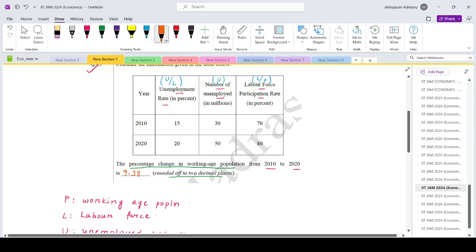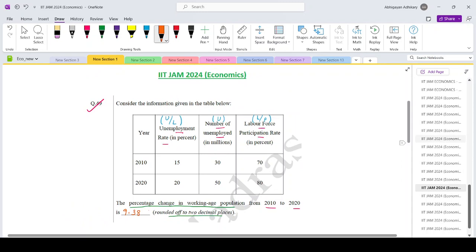And in the question they said that rounded off to two places of decimal, so that is 9.38. That's your answer for question number 49. Thank you.